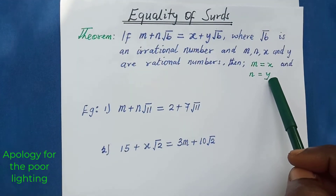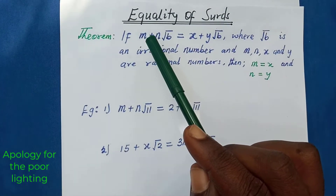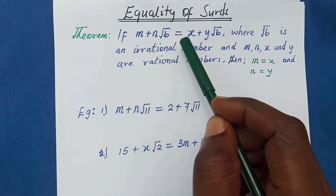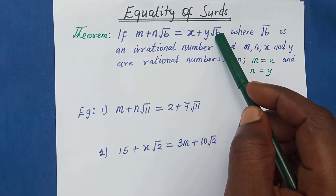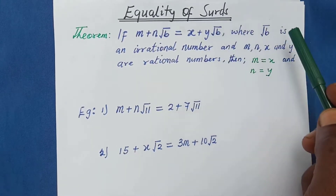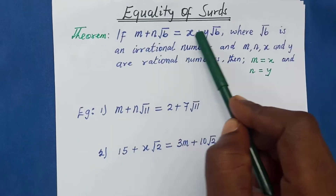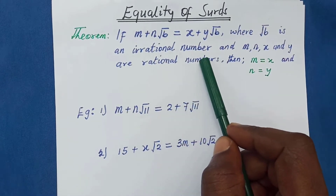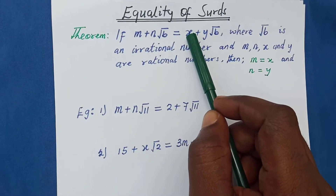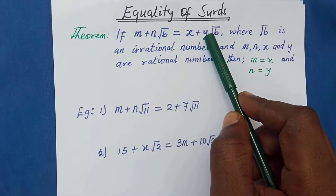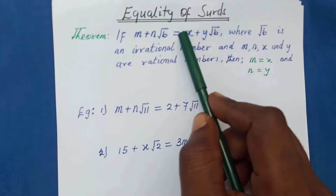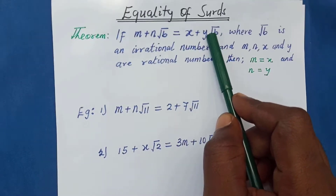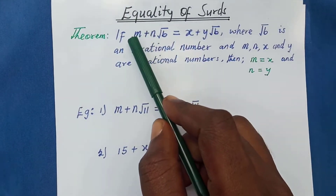So we are seeing that if you have two expressions, m plus n root b and x plus y root b, and the surd in the first expression is the same as the surd in the second expression — and that surd is an irrational number — and m, n, x, and y are all rational numbers, then m equals x and n equals y. So if you have the same surd root b in both expressions, the numbers in front of the surd are the same, and the numbers without the surd are also the same.